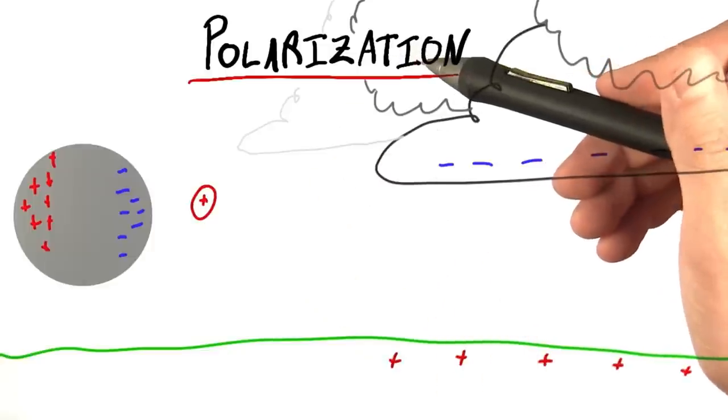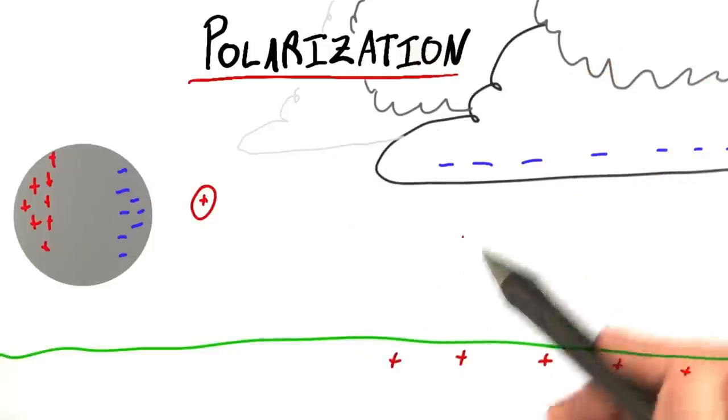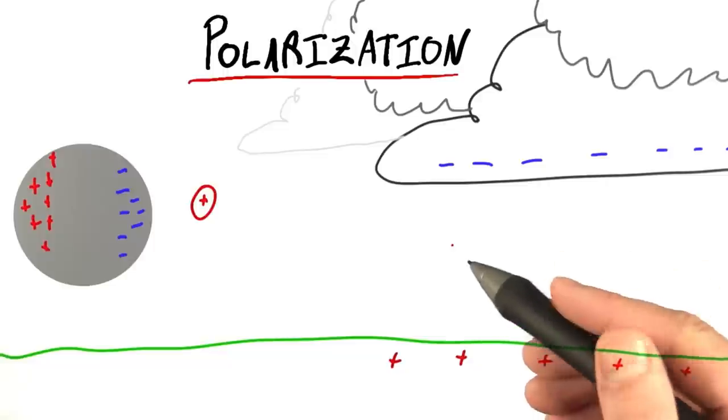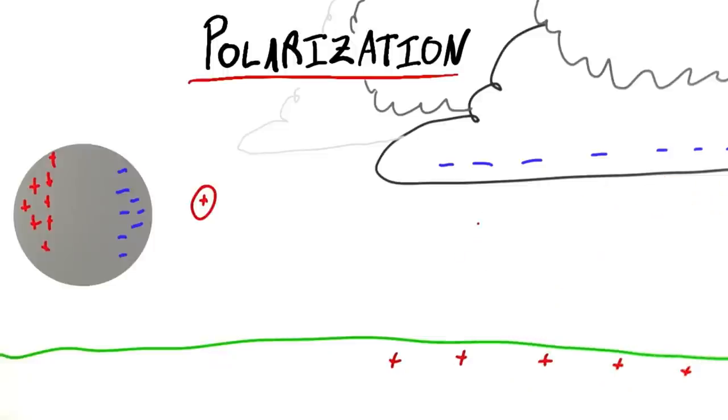This concept of polarization is essential to the functioning of what we're going to find is Benjamin Franklin's solution to saving buildings from lightning strikes.